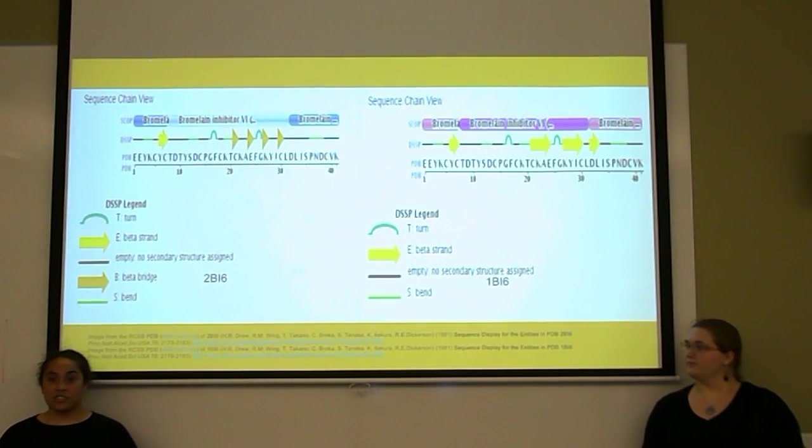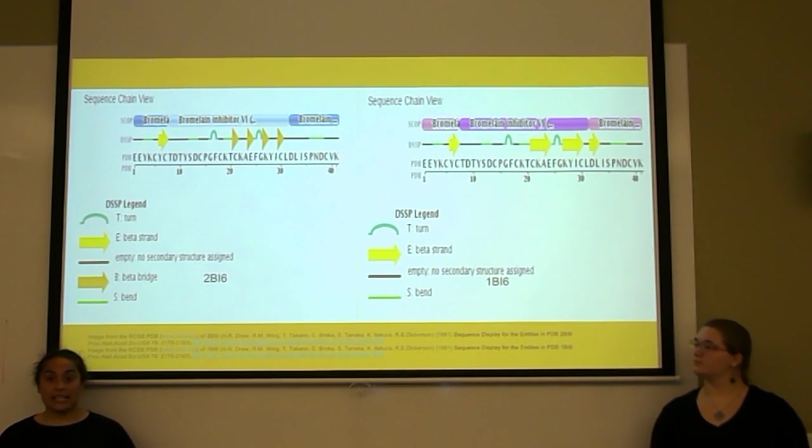Further investigations into the sequence shows the differences. The 2Bi6 enzyme has four beta bridges, while 1Bi6 does not have any. 1Bi6 has four beta strands, while 2Bi6 has one. They both have four bends and two turns, staying true to the 90% similarity.